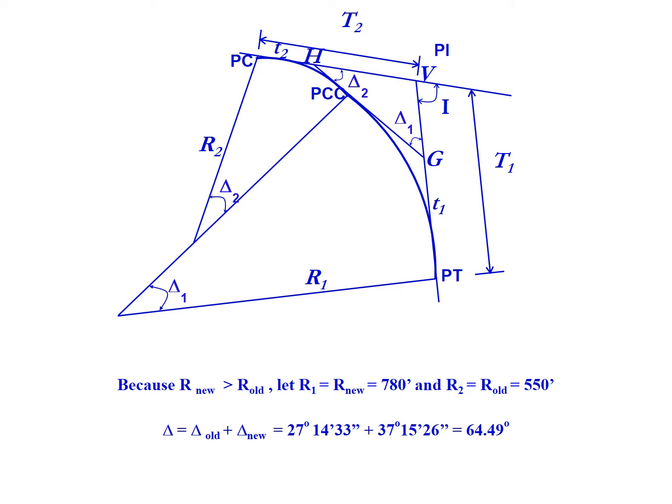The overall delta is the sum of the two deltas—that's going to be 64.49 degrees for that total intersecting angle. What we're going to focus on here in terms of the tangents is T2. We're given the PI, we need to go back to the PC, then along to the PCC, and then finally the PT.